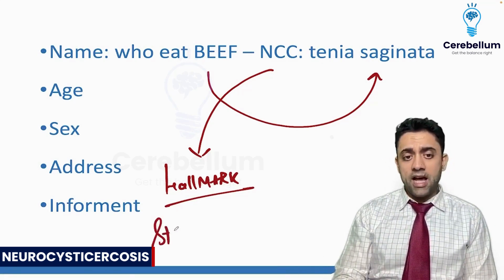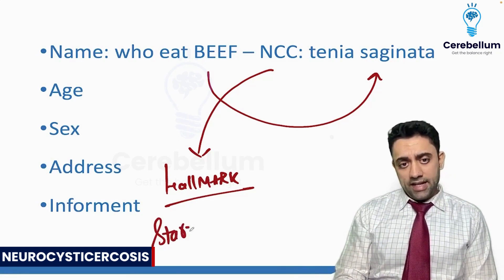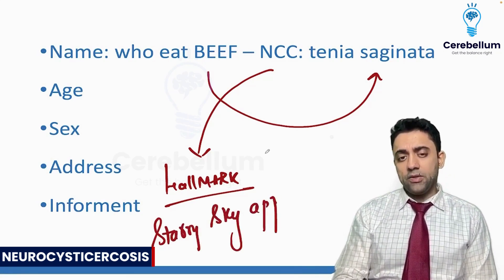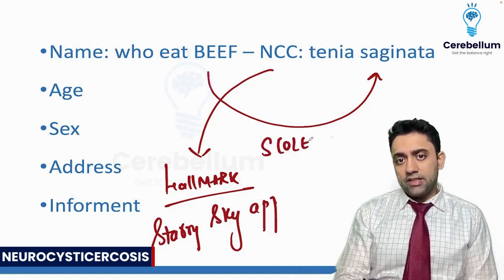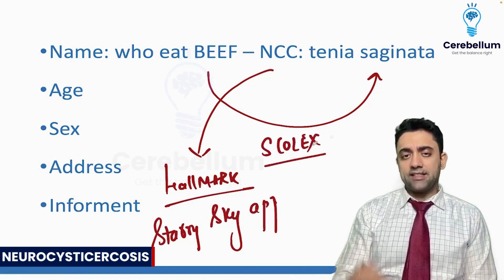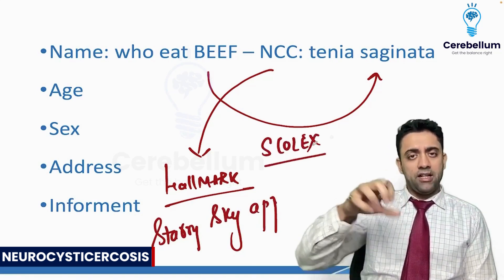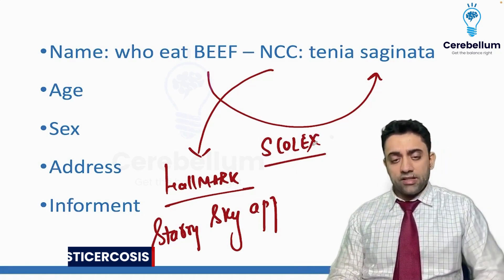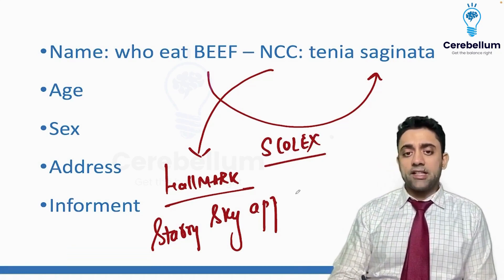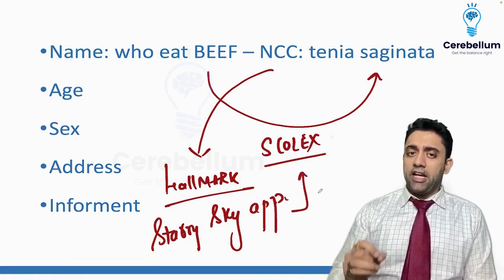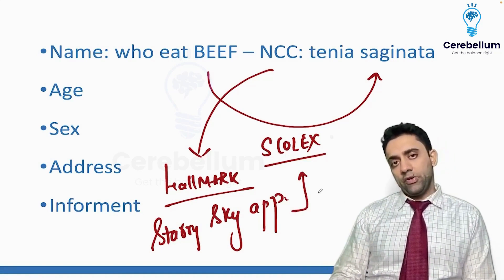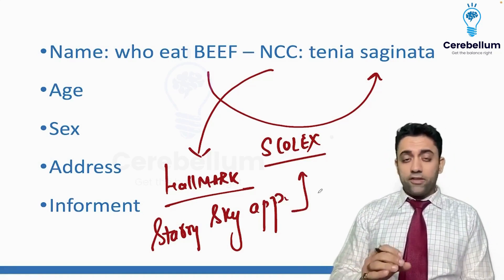Very, very important — starry sky appearance. Starry sky appearance. You see the scollex, which is the head of the tapeworm, in a case of neurocysticercosis. The starry sky appearance is the hallmark of neurocysticercosis.